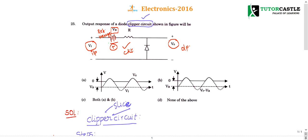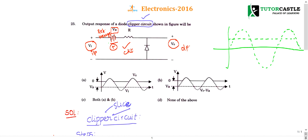The dotted lines in the options indicate the input is a sinusoid — he hasn't specifically stated it but dotted lines represent the input. Let me draw one cycle of the input sinusoid and put the reference voltage. Since N is connected to the output, clip off the negative part — only the positive part will remain. This is the output.